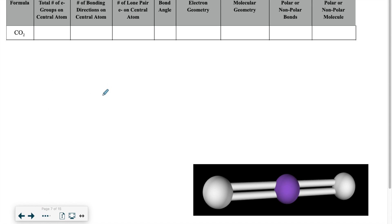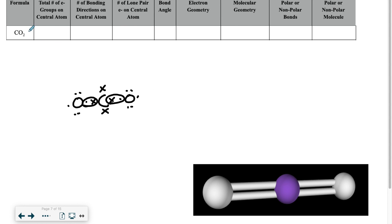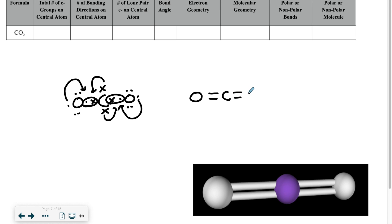In our next example, we have carbon dioxide. I'm going to draw X's around the carbon and dots around the oxygen. Each of the oxygens has six valence electrons, and the carbon has four. The only way to make all these atoms follow the octet rule is to put electrons in the middle to make additional bonds — taking those electrons and putting them in the center on each side. So we end up with oxygen double bonding to carbon on either side, and each oxygen having two lone pairs.